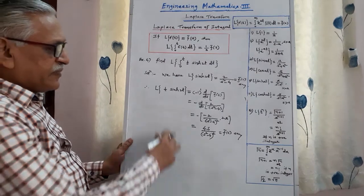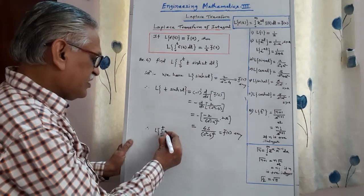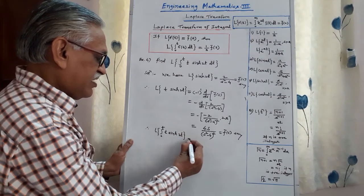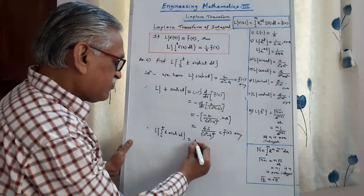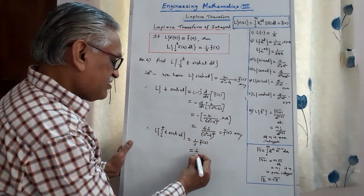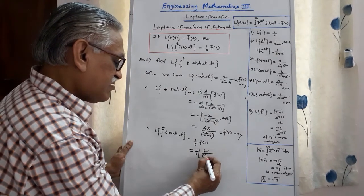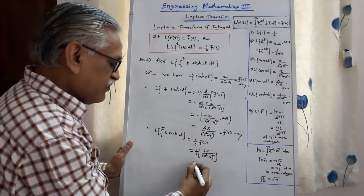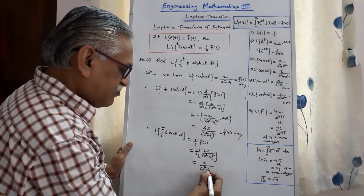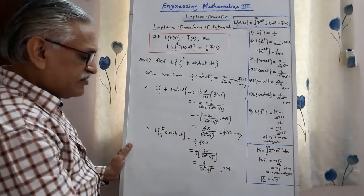Second step is completed. Then, last step: the Laplace Transform of the integral from 0 to t of t·sinh(2t) dt equals 1/s · F̄(s). Therefore it equals 1/s · [4s/(s² − 4)²]. Simplifying, s gets cancelled, giving 4/(s² − 4)², with the condition s > 4, as the required answer.